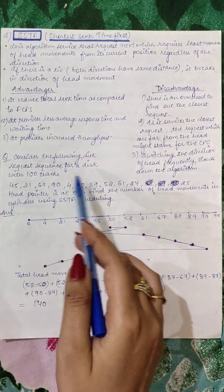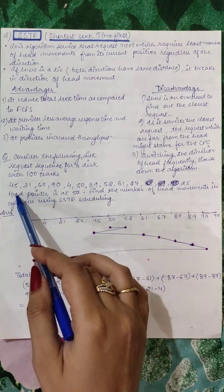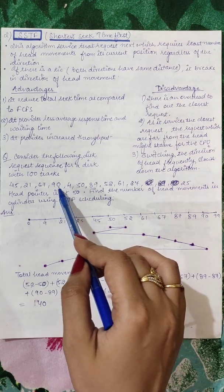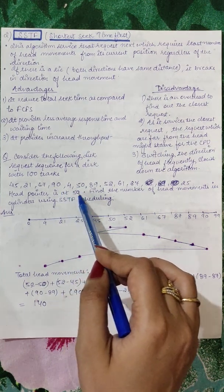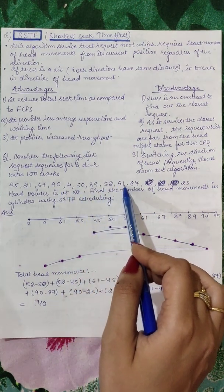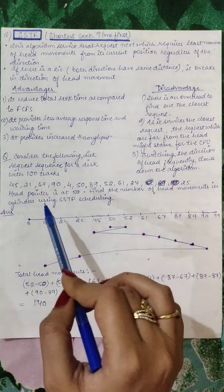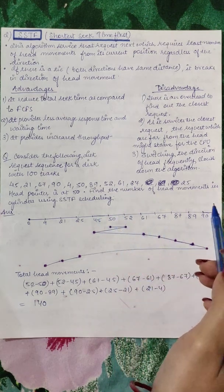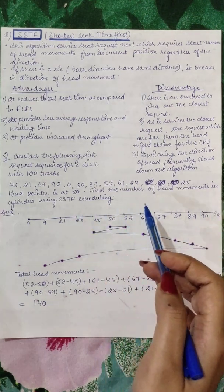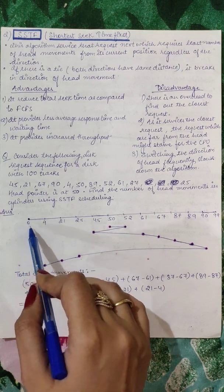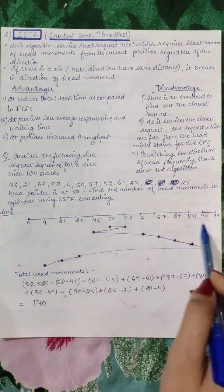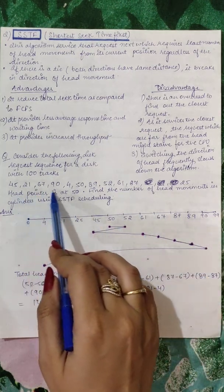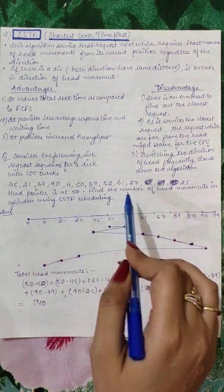Question is: consider the following disk request sequence for a disk with 100 tracks. There is a given request: 45, 21, 67, 94, 50, 89, 52, 61, 87, and 25. Head pointer is at 50. You have to find out the number of head movements using SSTF scheduling. So again, we maintain a diagram for 0 to 99, which is showing you total tracks. In the middle, I have drawn the track requests in ascending order.